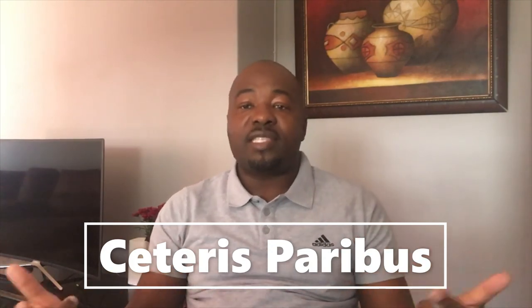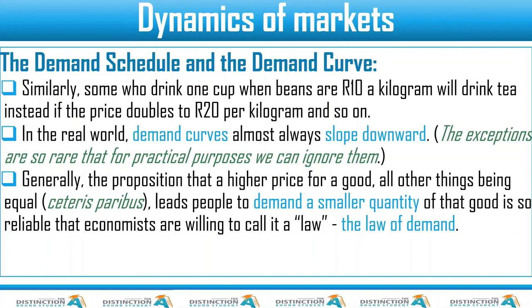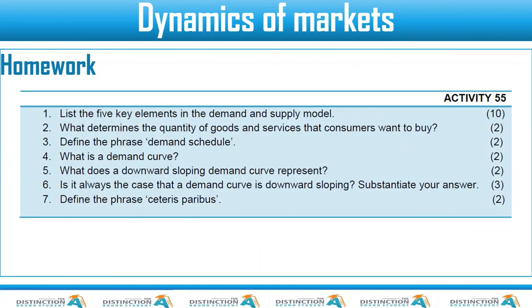Whenever I say Ceteris Paribus in grade 11 or grade 12, you are going to understand what I'm referring to. So: the proposition that a higher price for a good, other things equal, leads people to demand a smaller quantity of that good is so reliable that economists are willing to call it a law — the law of demand. You will always know what it means when I mention it.